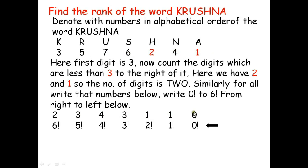After writing these counts, now write the factorials starting from 0, from the right side: 0 factorial, 1 factorial, 2 factorial, 3 factorial, 4 factorial, 5 factorial, and 6 factorial.